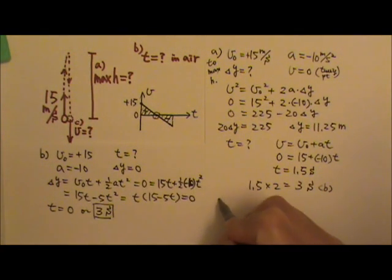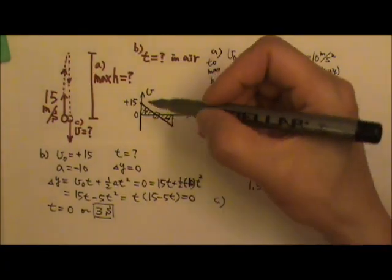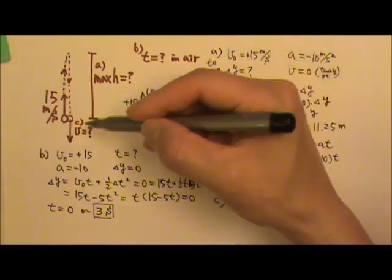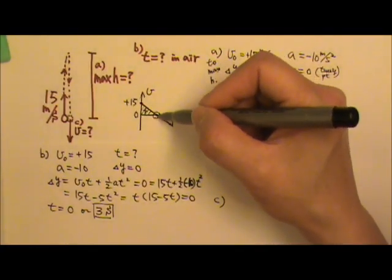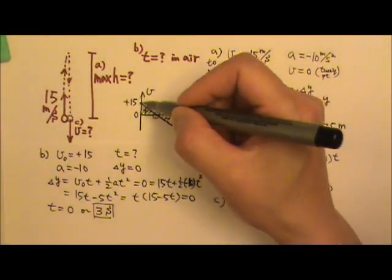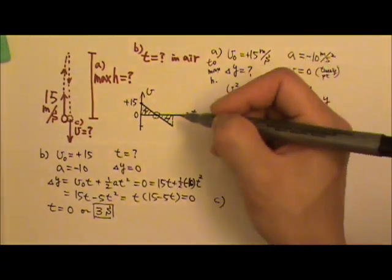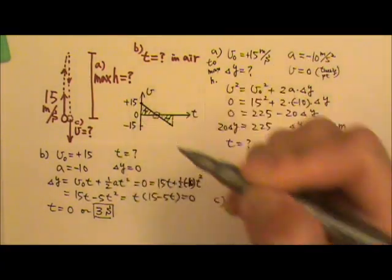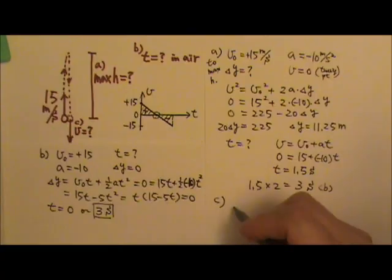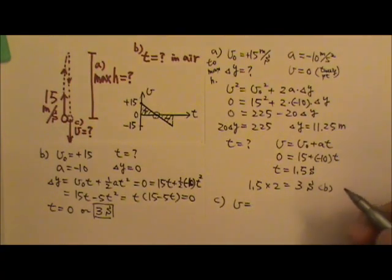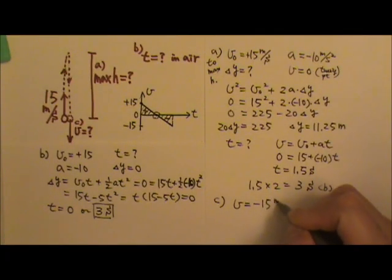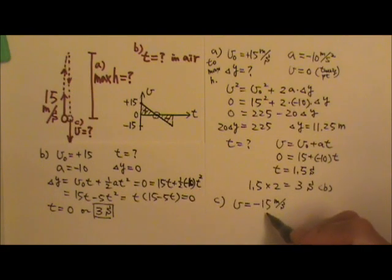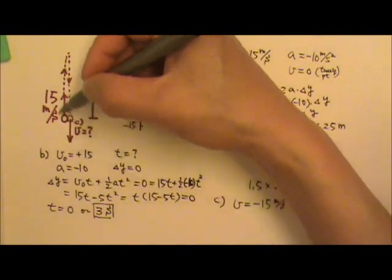Now let's see part C. You want the final velocity right before it's caught. Since these two triangles are congruent, if the initial velocity is positive 15, the final velocity must be negative 15. So the moment before it's caught, the velocity is negative 15 meters per second — same speed but downward.